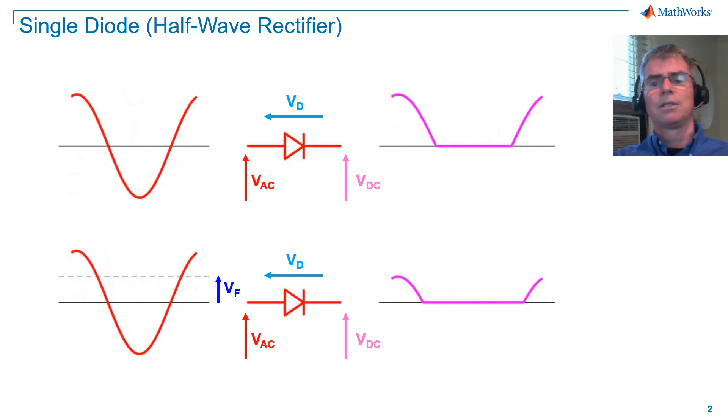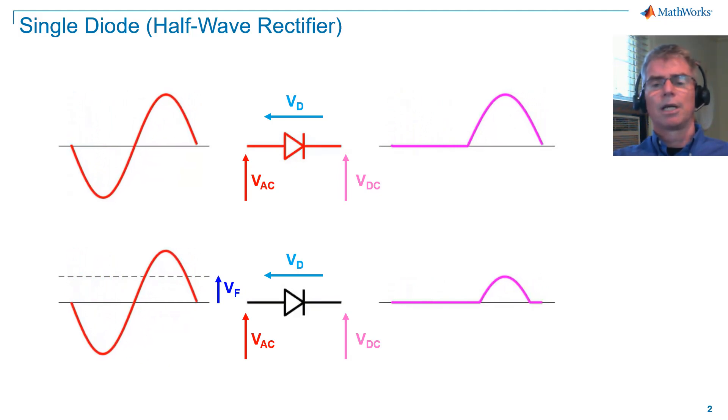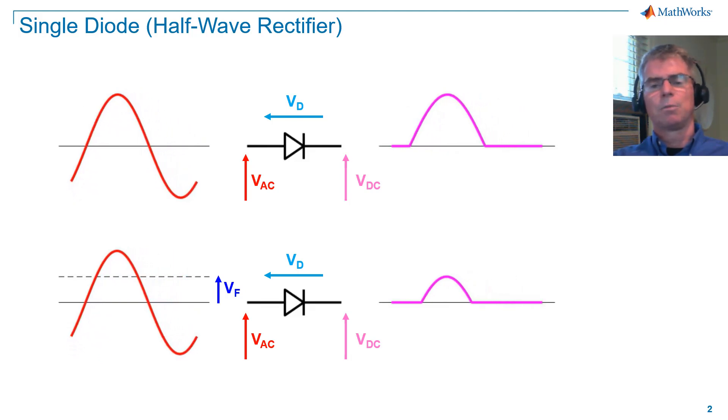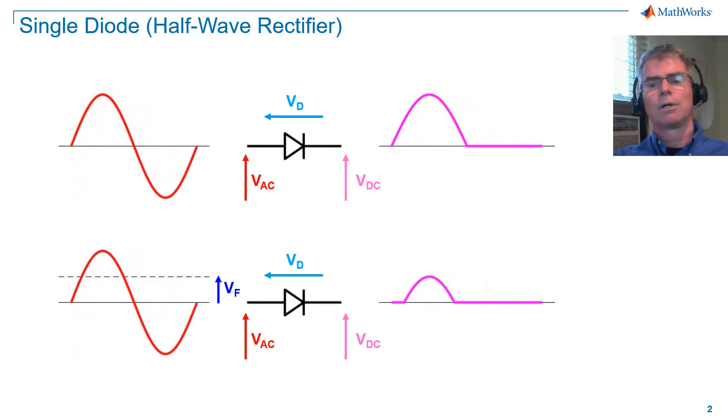In the animation, the diode is colored red when it conducts and black when it's not conducting. A single diode is known as a half-wave rectifier, as it does not conduct during the negative cycle. Note that when a diode switches its conduction state, we refer to that as commutation.